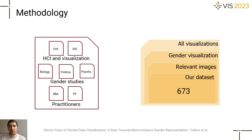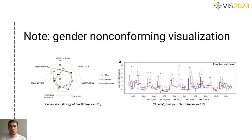Before we begin to present our results, I would like to add a brief note. In the following, we will discuss gender by comparing only women and men. Unfortunately, of all the visualizations collected, only 17 out of the 904 represented non-conforming genders, which makes the comparison with binary gender impossible.